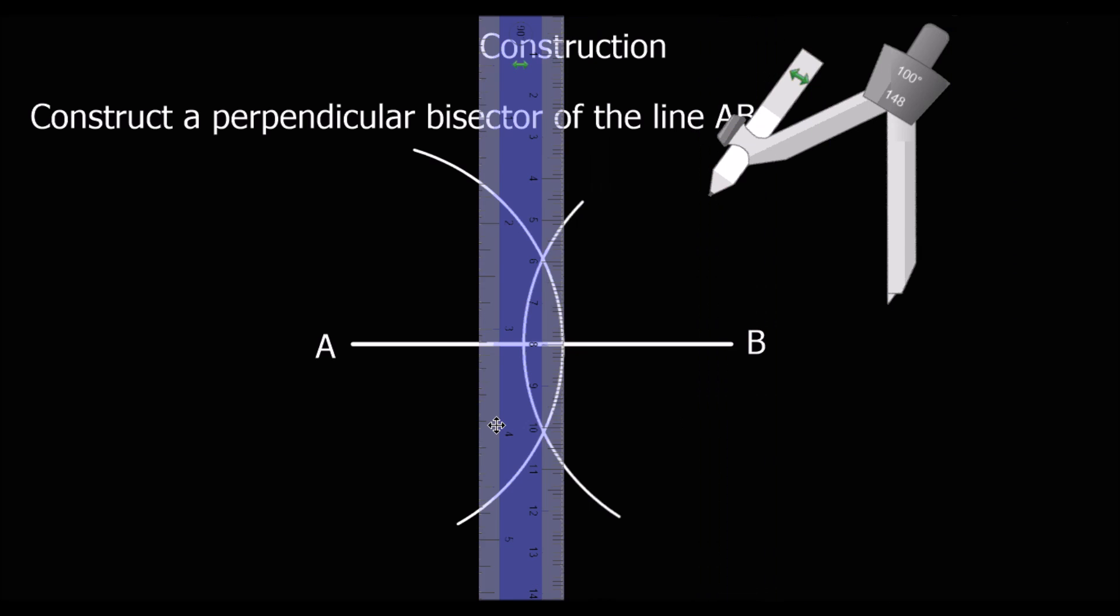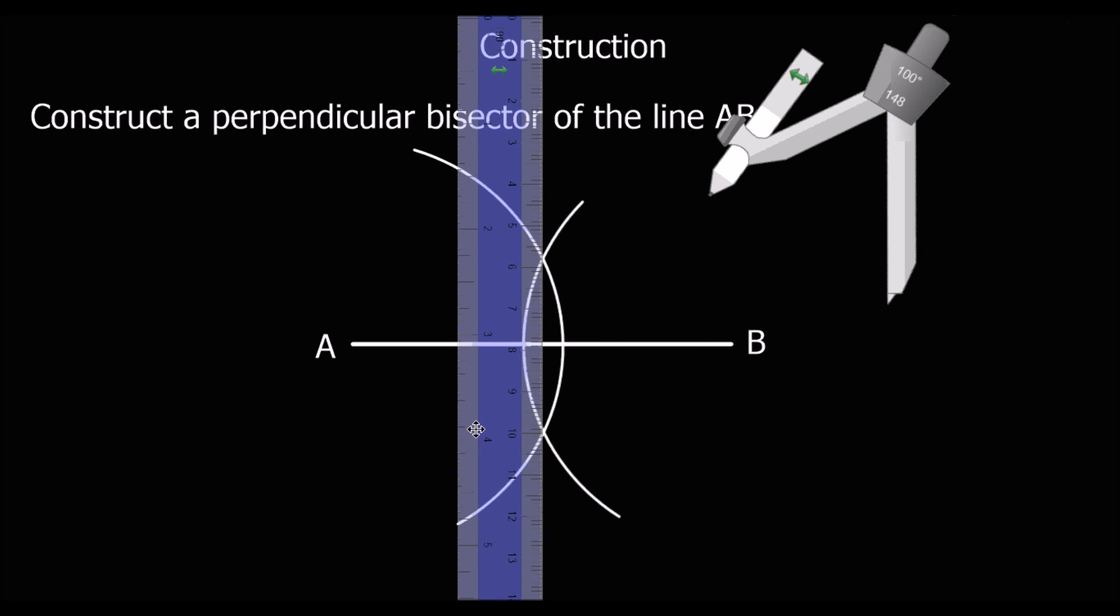Here and here. So all we have to do is get a ruler and join them up. We're going to get the ruler and hopefully we're going to be able to draw a line down the ruler.